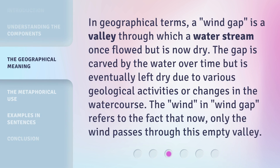In geographical terms, a wind gap is a valley through which a water stream once flowed but is now dry. The gap is carved by the water over time but is eventually left dry due to various geological activities or changes in the water course. The 'wind' in wind gap refers to the fact that now only the wind passes through this empty valley.